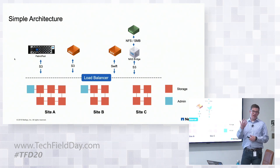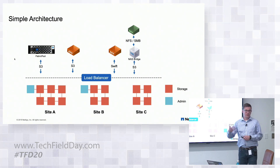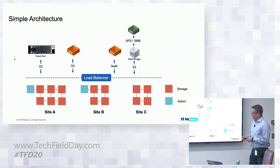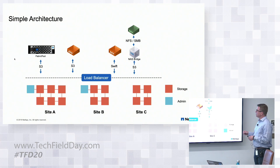Think about the fact that we have more nodes in Oregon and North Carolina than we do in Sunnyvale. That ability to have asymmetrical architectures makes that possible.